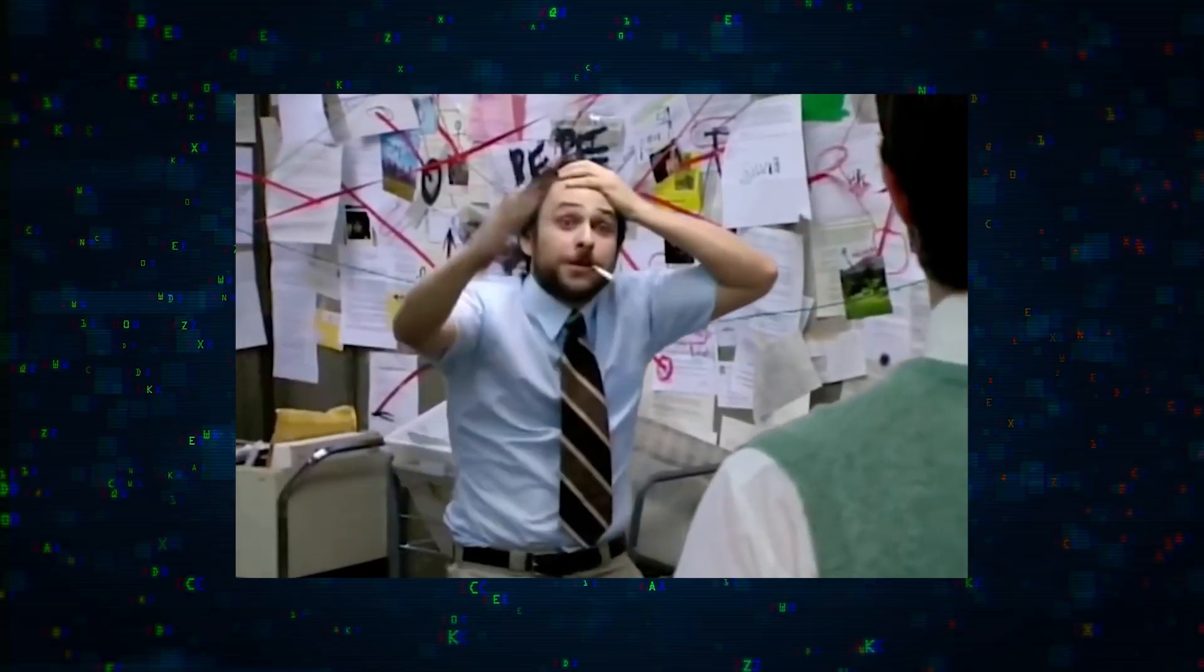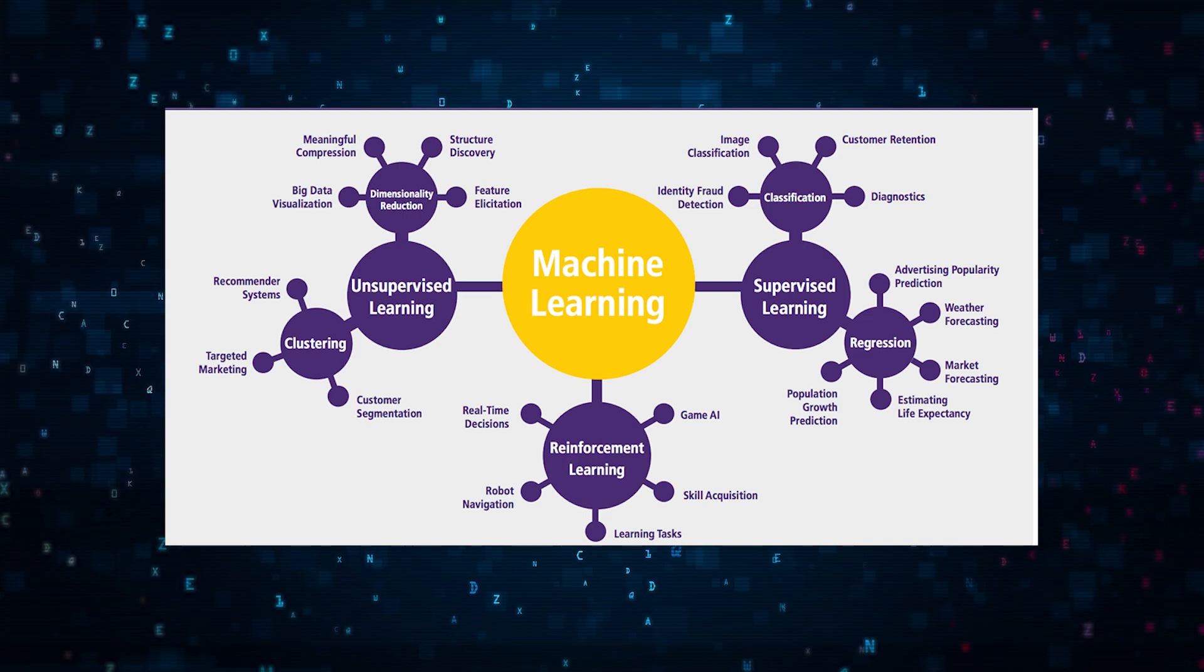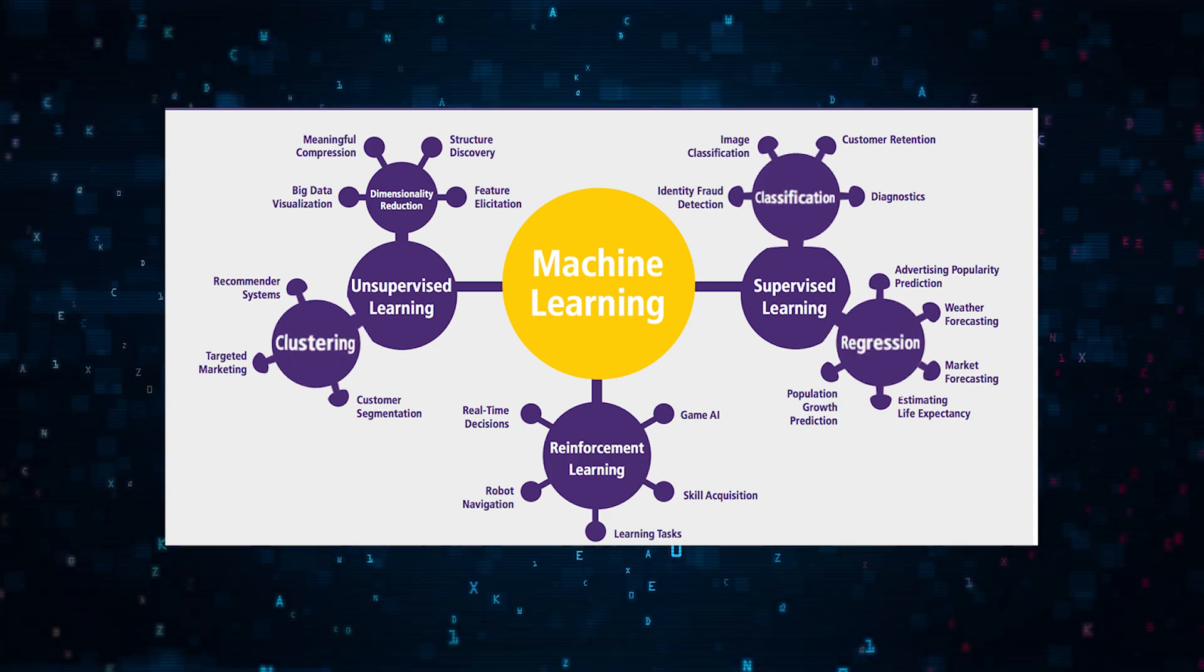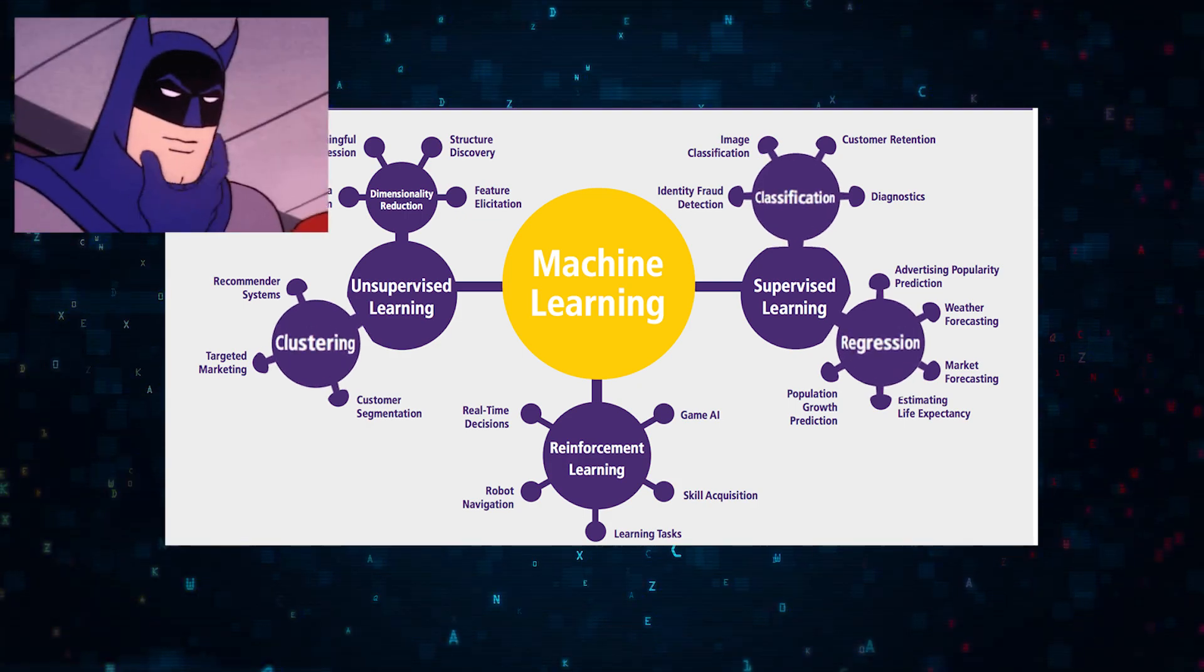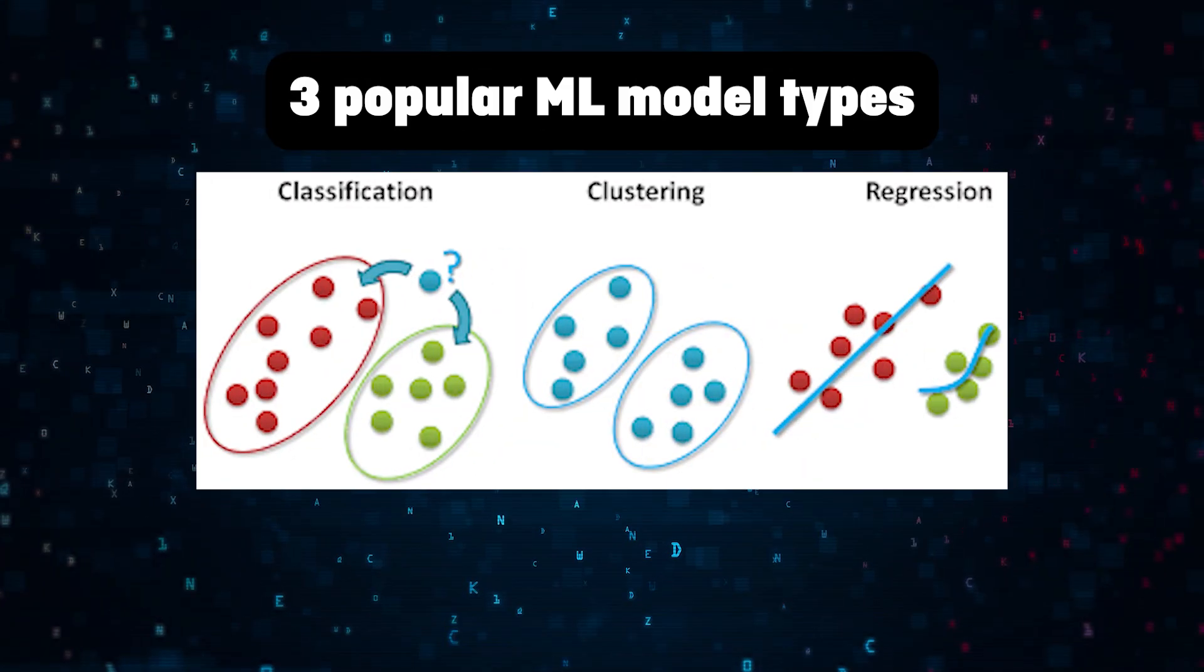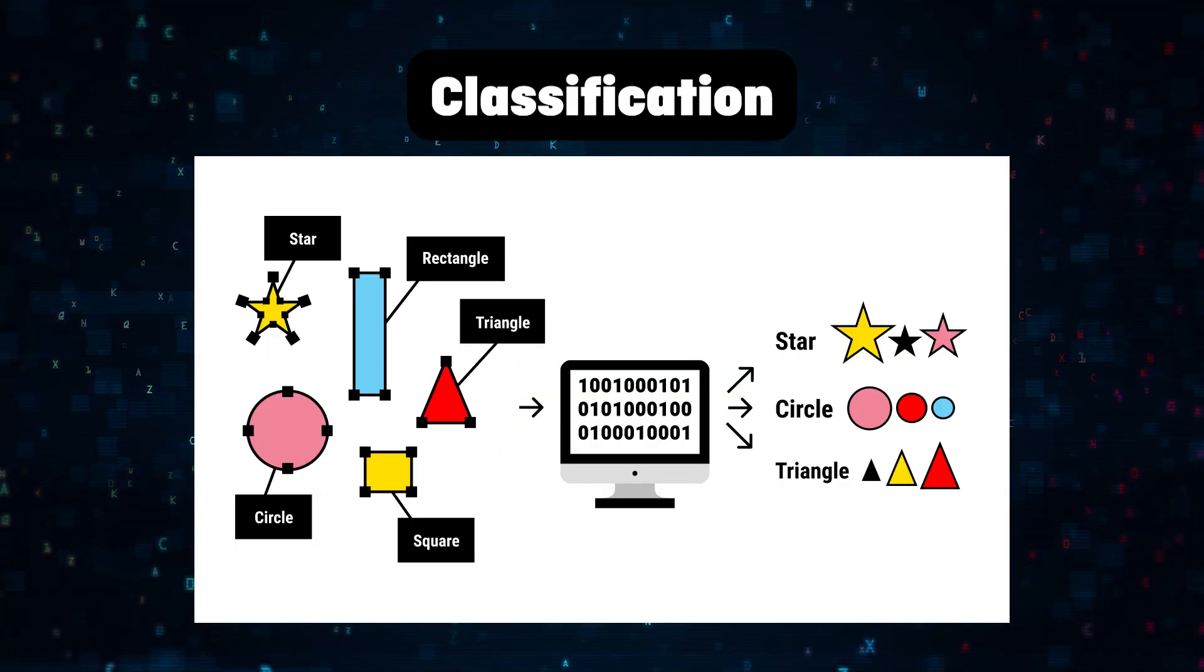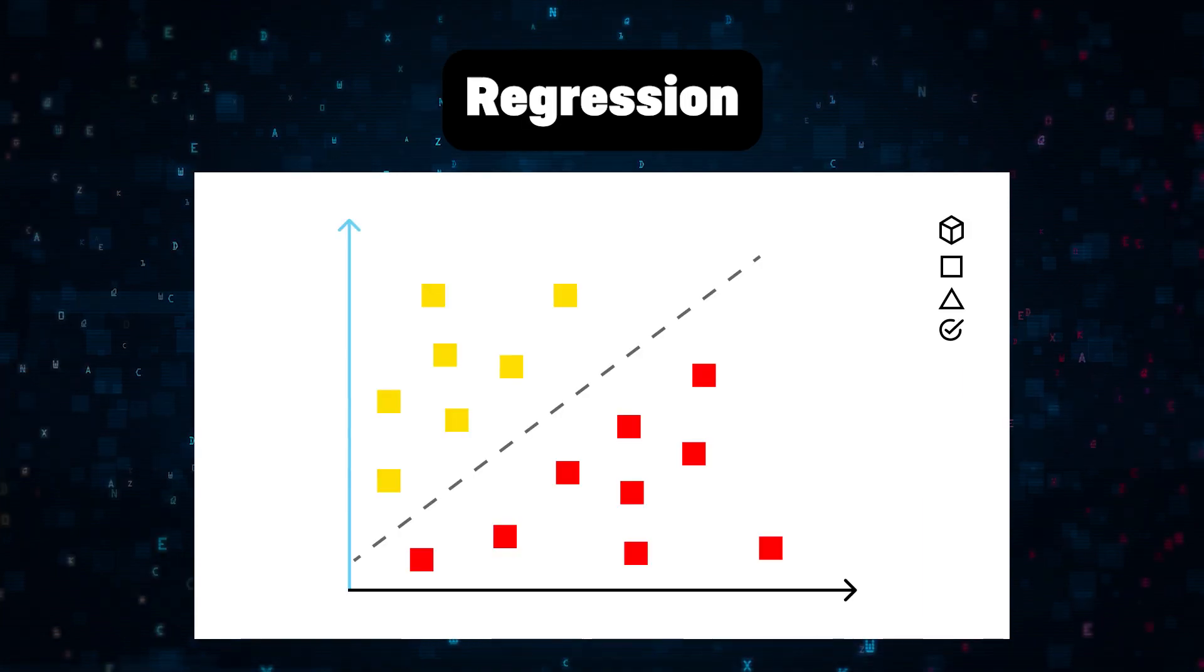But there's another way to categorize machine learning. We can also categorize ML models by focusing on the way the model actually works. In this way, ML models can be divided into three types: classification, regression, and clustering.